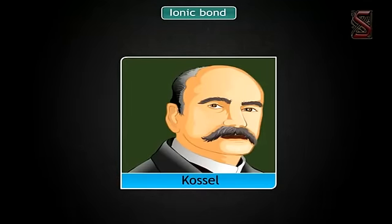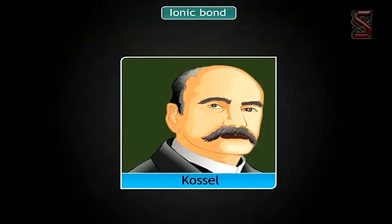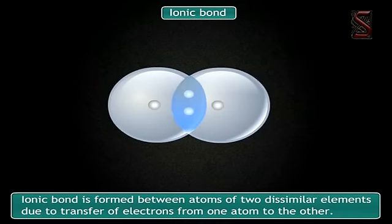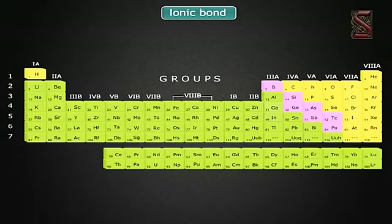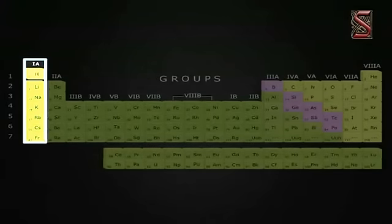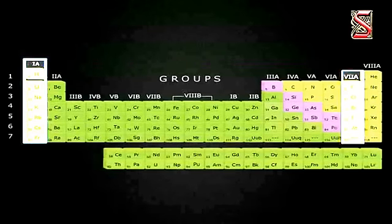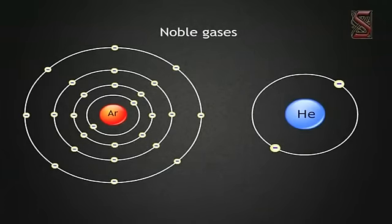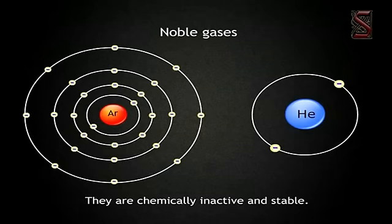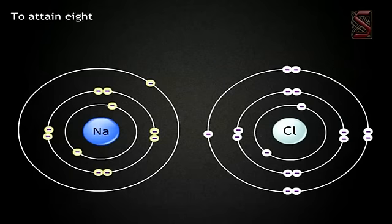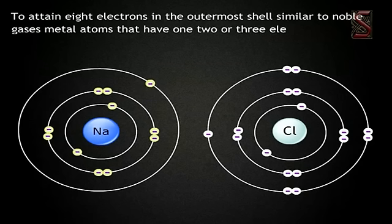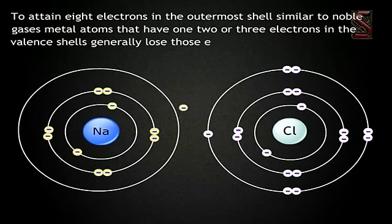Let's now learn about ionic bond and covalent bond. Kossel proposed the ionic bond — also called the electrostatic bond — based on the following facts: an ionic bond is formed between atoms of two dissimilar elements due to transfer of electrons from one atom to the other. There are highly reactive metals like alkali metals and highly reactive non-metals like halogens on the left and right sides of the periodic table respectively. Noble gases, except helium, have eight electrons in their valence shells; they are chemically inactive and stable.